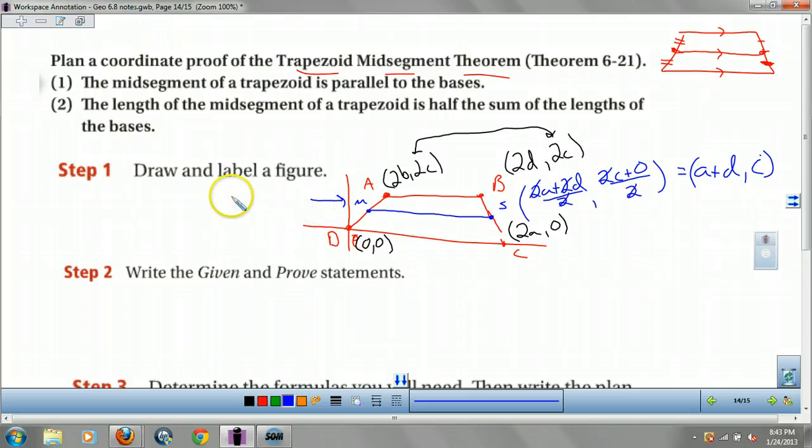And you do the same way, but now those are both 0, right? You get it. So you actually get 2b over 2, 2c over 2, which is b, c is m. Okay?